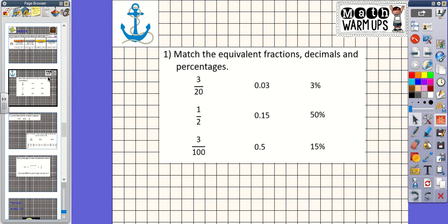Let's match these equivalent fractions, decimals, and percentages. I know that 3 hundredths is 0.03, which is 3%. I know that a half is the same as 50%, which must be 0.5. So then my one that I've got left is 3 twentieths, matched to 0.15, matched to 15%.